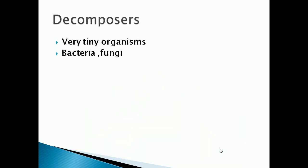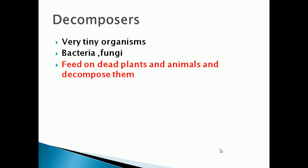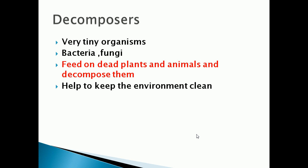Now, decomposers. Decomposers are very tiny organisms. Examples of decomposers are bacteria and fungi. These decomposers feed on dead plants and animals and decompose them. Decomposers eat dead plants and animals and break them down into organic matter, converting them into manure. Decomposers help to keep the environment clean.